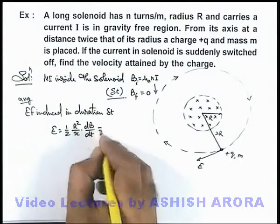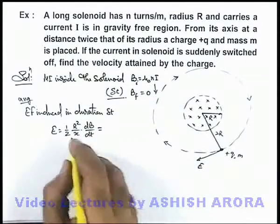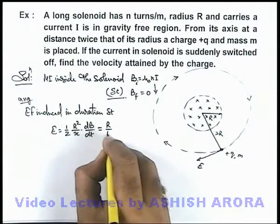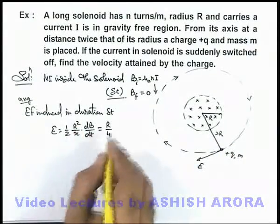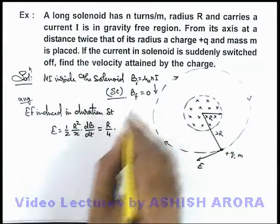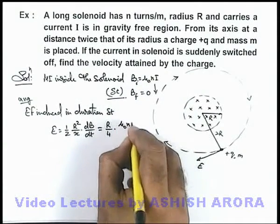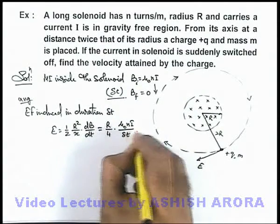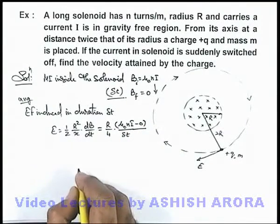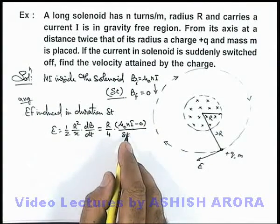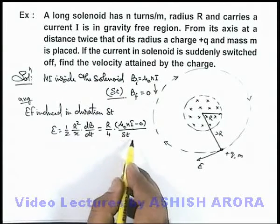Then in this situation the value of x is 2R, so we can write it R/4 because when we put x equal to 2R, one R gets cancelled out. And here dB/dt we can write as μ₀nI divided by Δt.